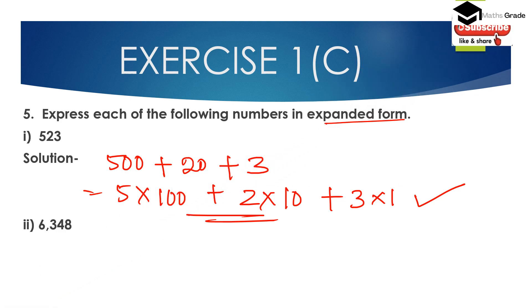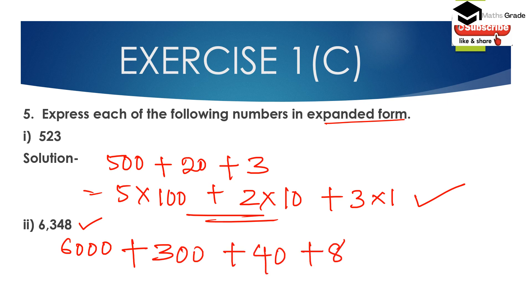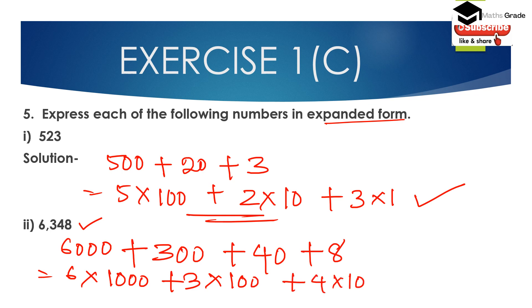Second: 6348. The expanded form of 6348 is: 6 is in the thousands place, 3 is in the hundreds place, 4 is in the tens place, and 8 is in the ones place. So the expanded form is 6 × 1000 + 3 × 100 + 4 × 10 + 8 × 1. This is the expanded form of the number 6348.